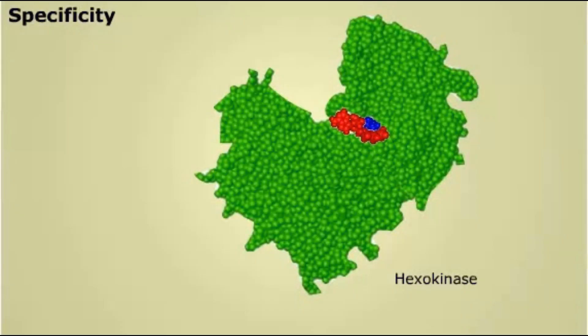Enzymes are very selective in the types of reactions they catalyze and the types of substrates they act on. Let's explore this concept of specificity by examining a biological process in which enzymes play a critical role, the pathway called glycolysis.